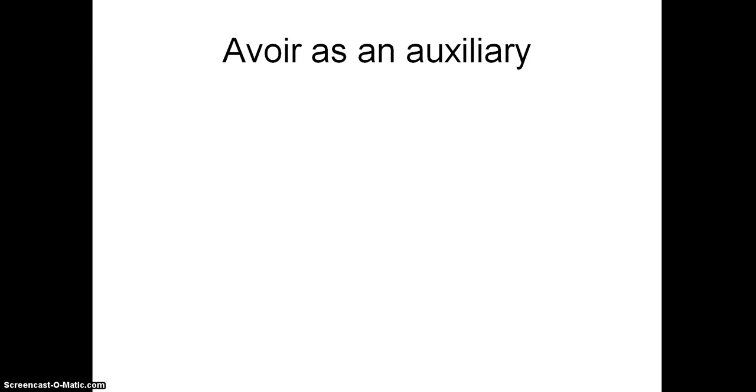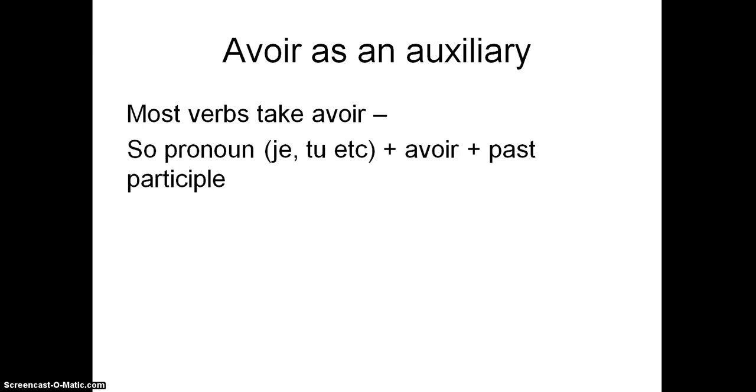So when we use avoir, which is the main verb that we use for the passé composé, most verbs take it, so we use the pronoun - je, tu, il, elle, on, nous, vous, ils, elles - the right part of avoir that goes with it, plus the past participle. So do you remember how avoir goes in the present tense? Right, let's have a little look.